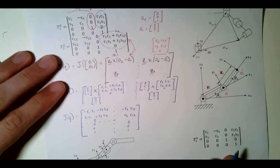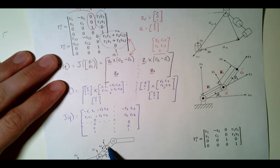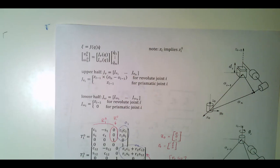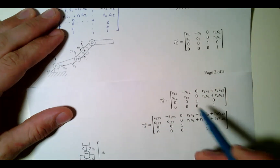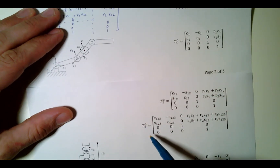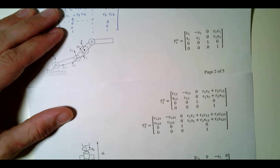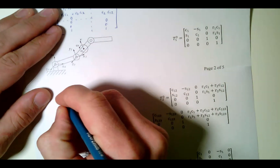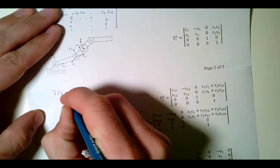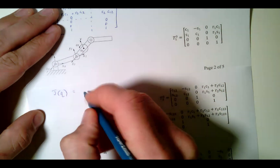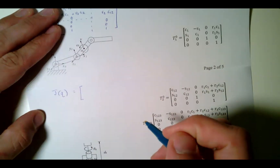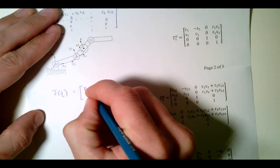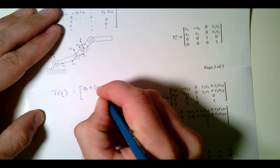The next question is: what's the velocity of the center of link 2? How fast is link 2 moving? If you want to do that, you're going to need just a little bit more information — we'll need the rest of our T matrices. Here are our other T matrices, and then we're going to have to build a Jacobian.